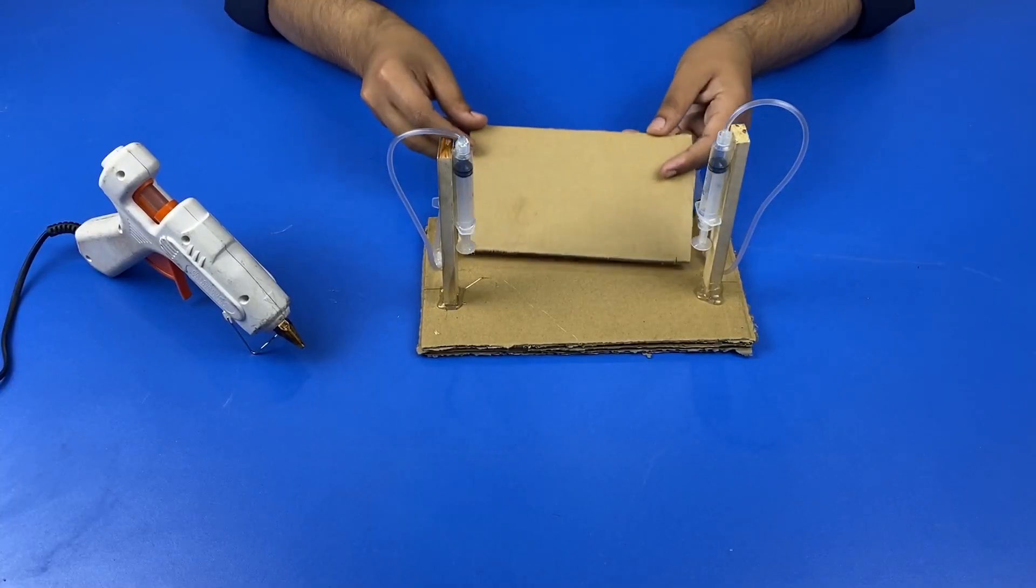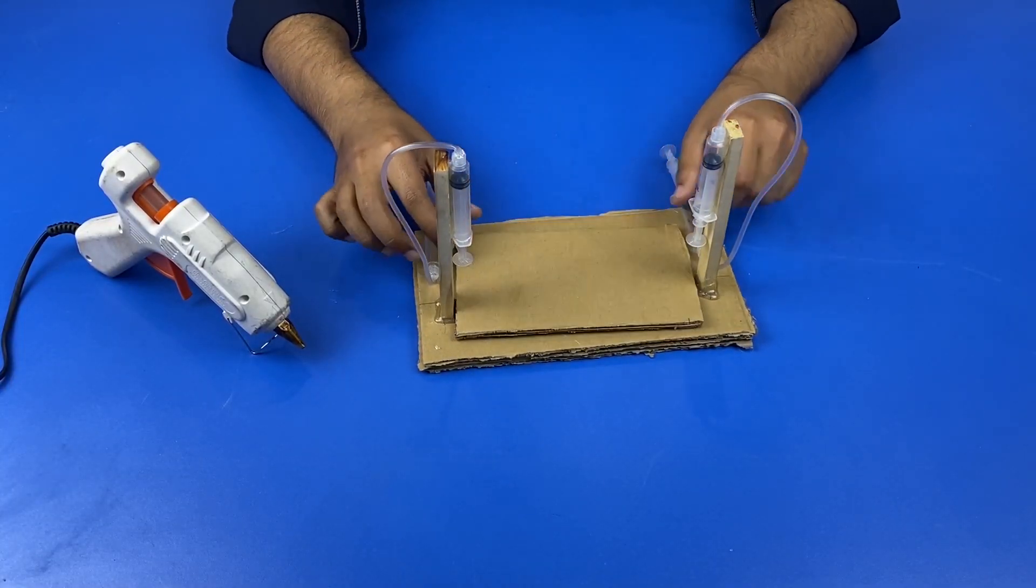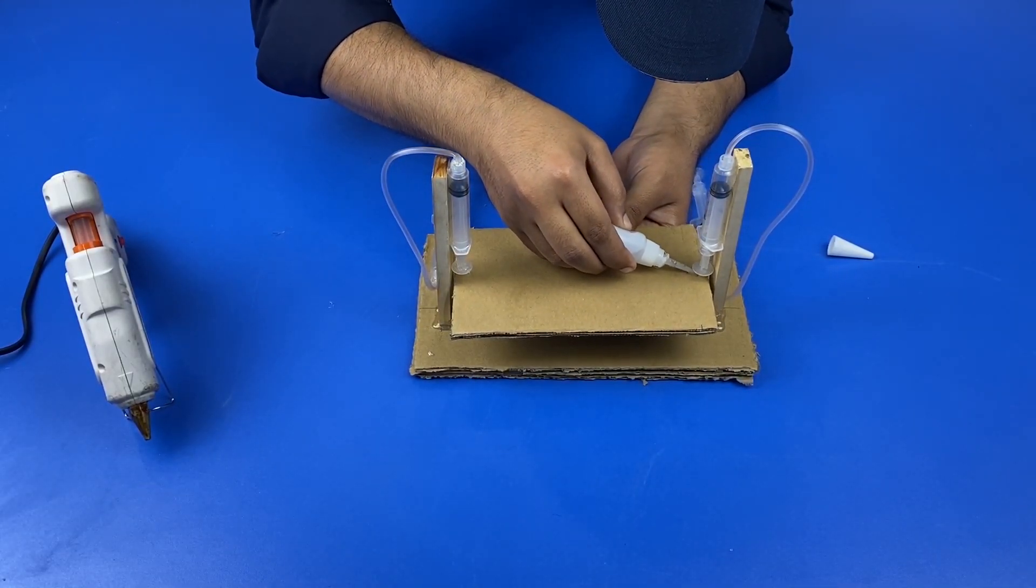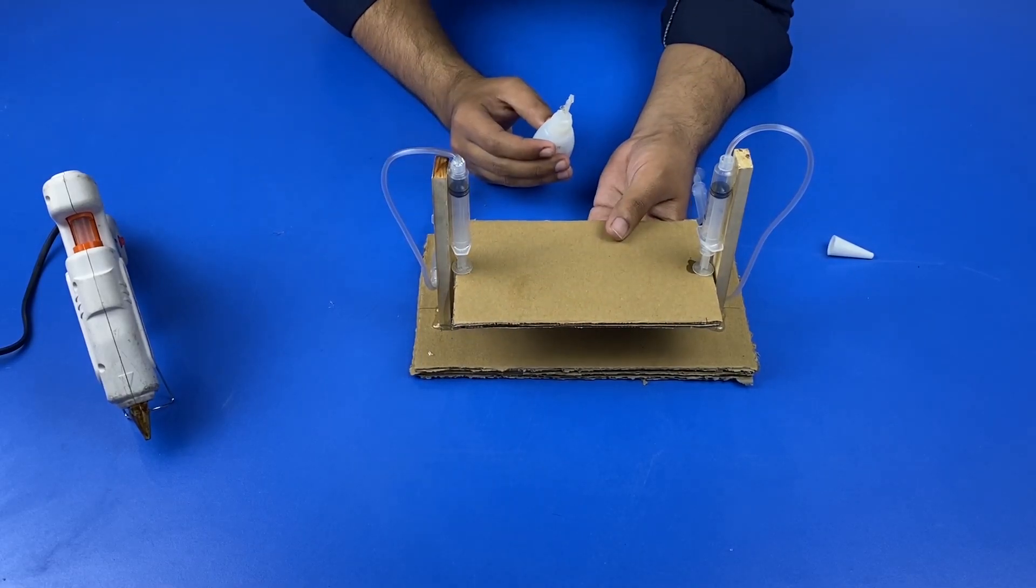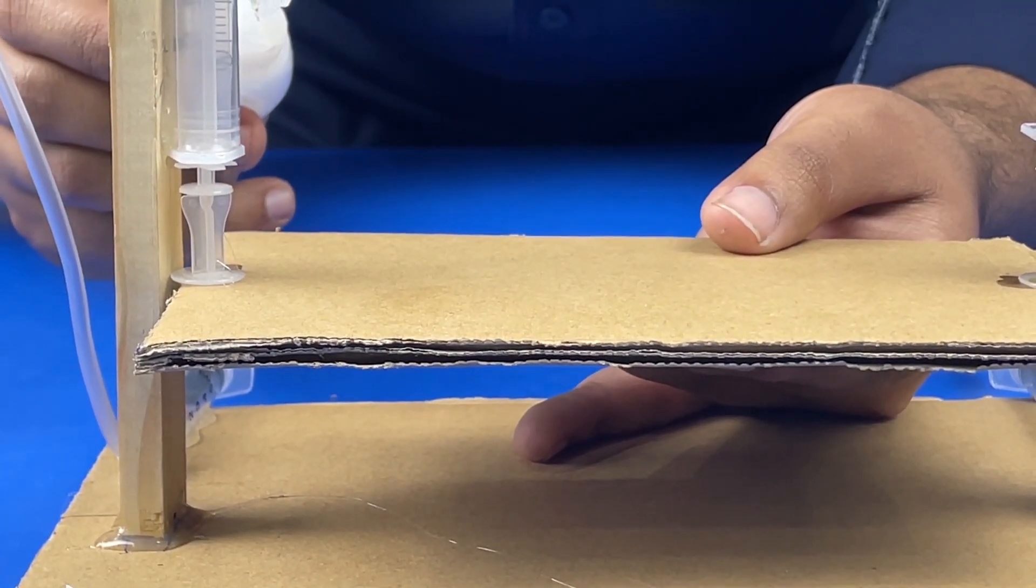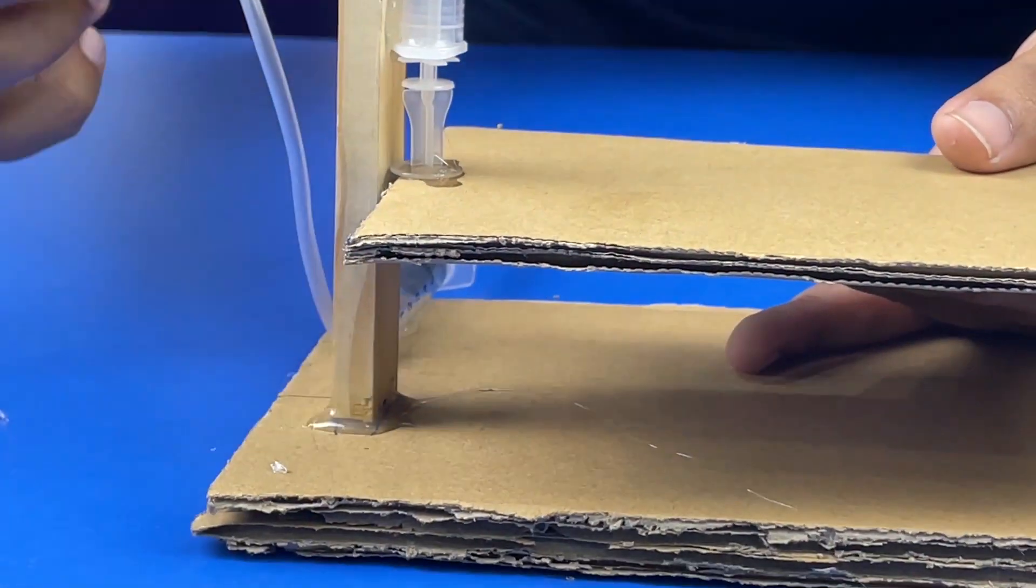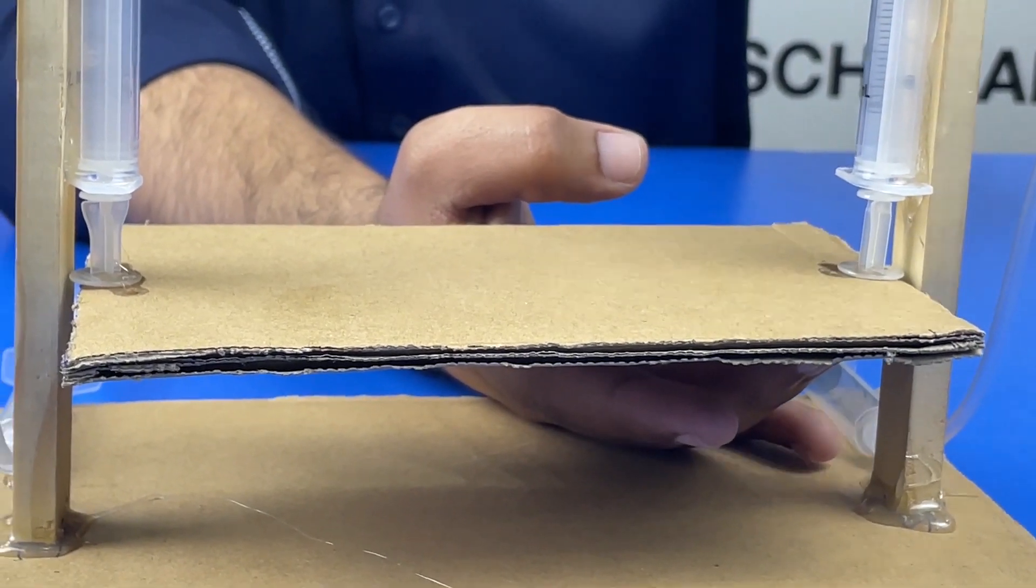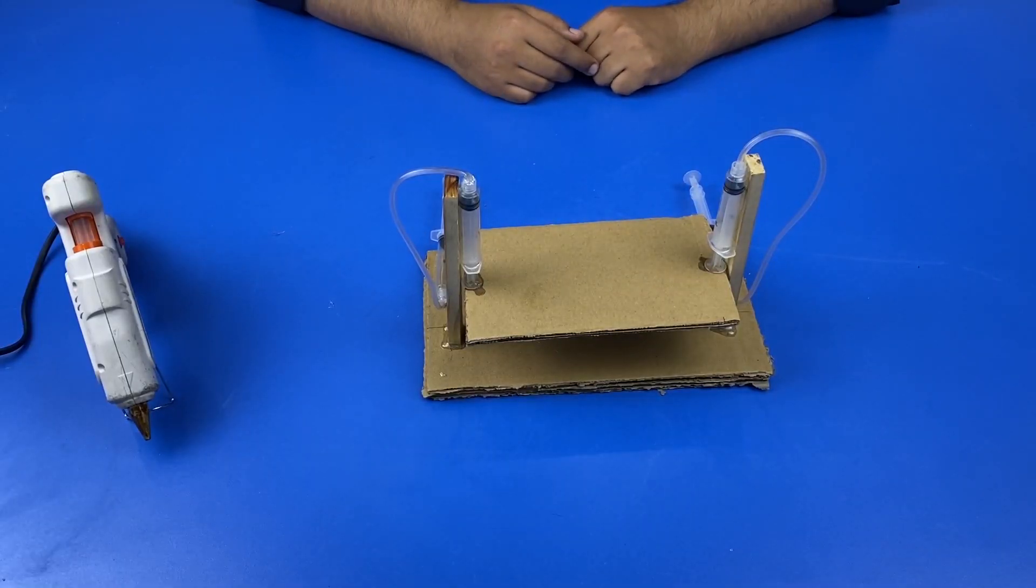Now the final step: Daniel takes the smaller cardboard piece and sticks it to the base of both the upper syringes. He sticks this cardboard piece by applying Elfie glue on each side. As the cardboard piece has to bear weight, it needs to be stuck to the syringes perfectly. Daniel also applies super glue to it.